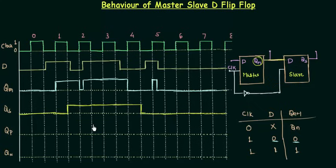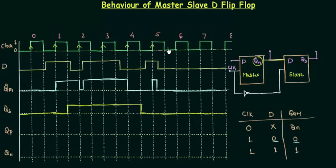This is the QS signal. It is very easy to draw once you have the truth table for the D flip-flop. Now we will find QP — the output of a simple positive edge triggered D flip-flop, not the master-slave one. The input is D directly, not QM. We consider changes only at rising edges of the clock. Initially QP is low, and at the first rising edge D is low so it remains low.